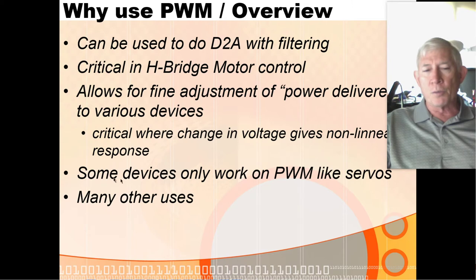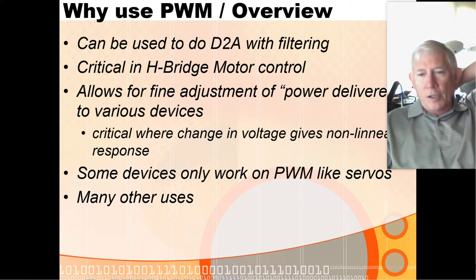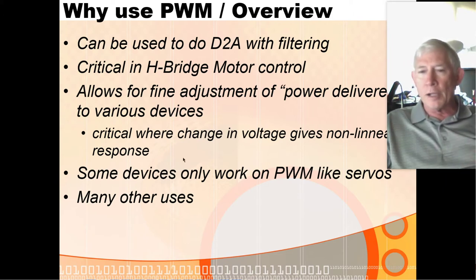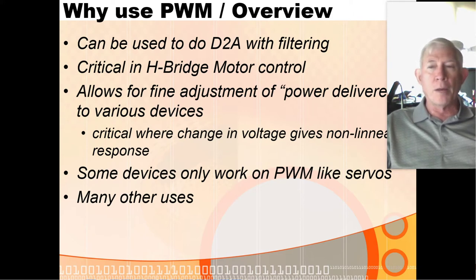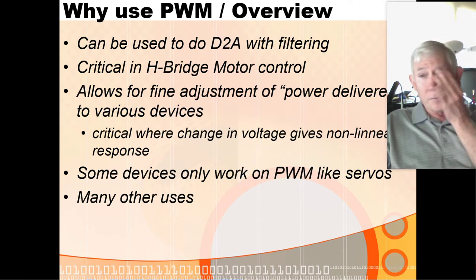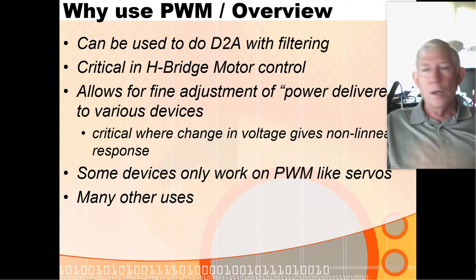Some devices are designed specifically for PWM, like servos. Servos require a fixed pulse repetition rate, and the useful variation in duty cycle is only from about 5% to 10% — that is, from 1 millisecond to 2 milliseconds within a 20-millisecond pulse window.